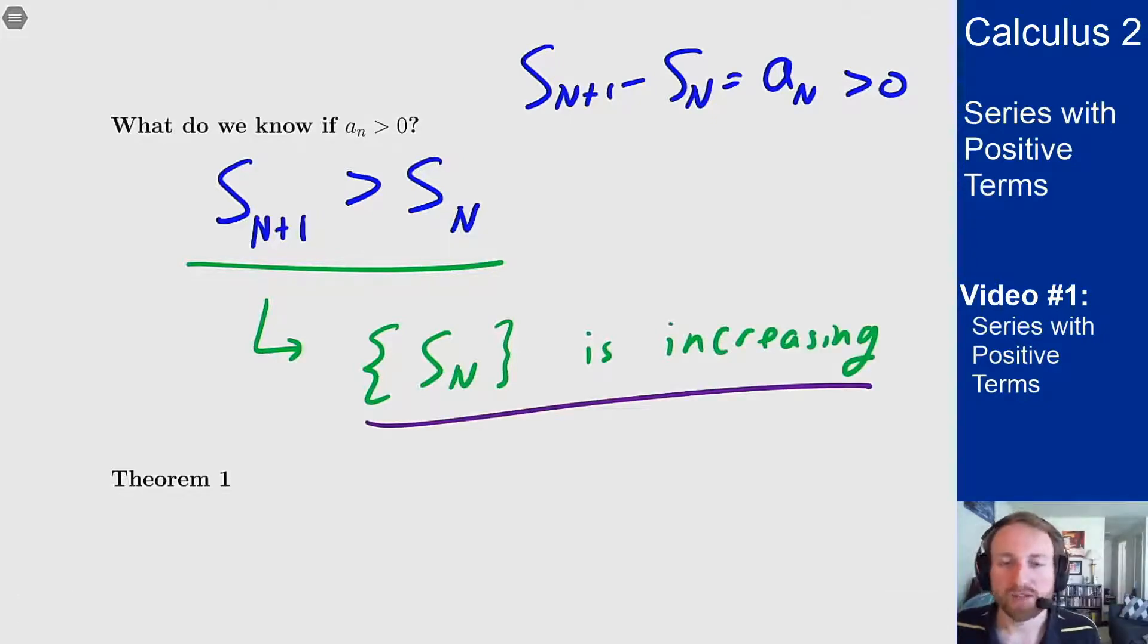And this only works for series that have positive terms. If we don't have positive terms, if we have terms that are negative, then this is not always the case. My partial sums are not always increasing. The point here is if I know that it's always increasing, I have an easier way to determine if they converge.